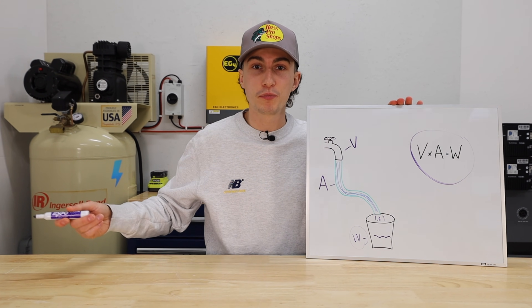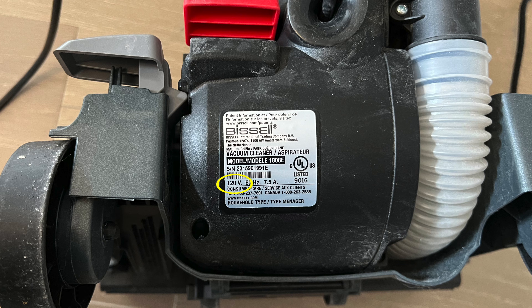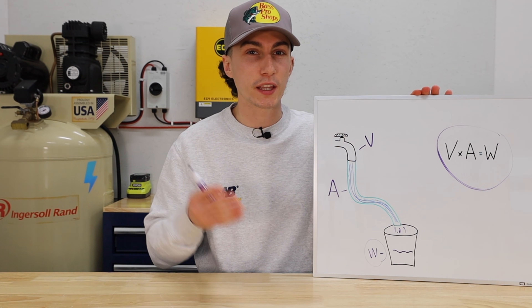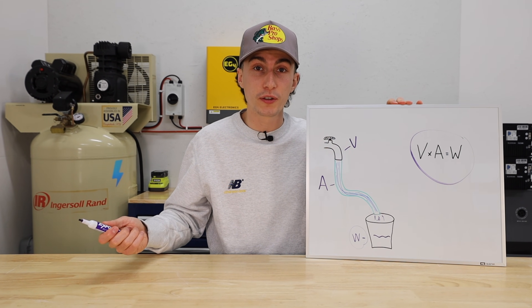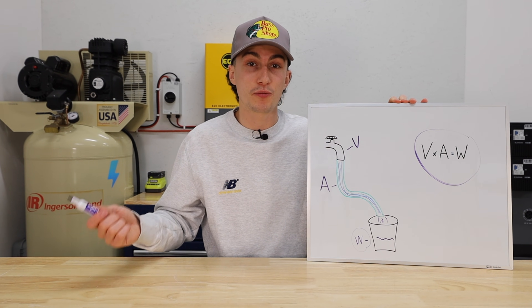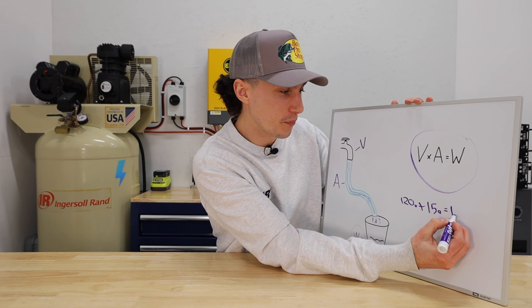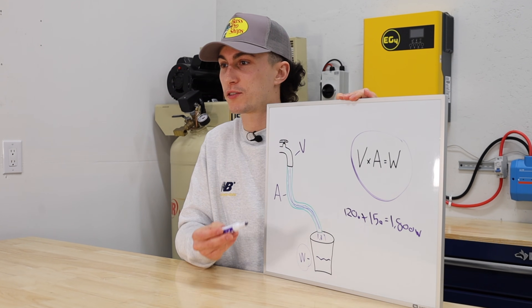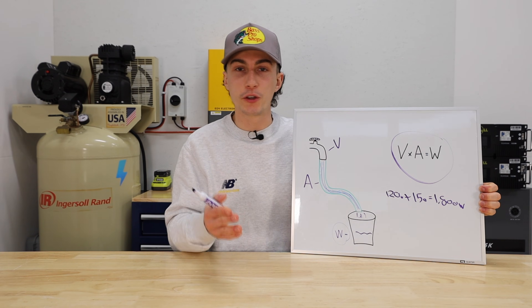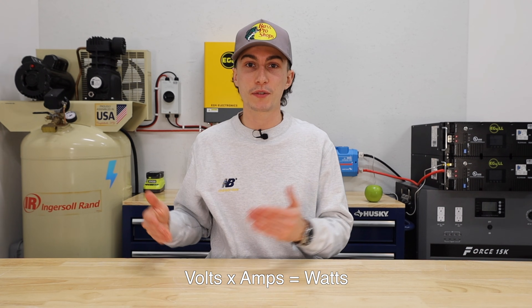So if you have a vacuum that plugs into the wall, it'll say somewhere on it how many volts and how many amps it takes. Almost every single thing that plugs into the wall has to have a sticker on it saying what it requires. All you have to do is take the fact that the vacuum is 120 volts, multiply it by the 15 amps it's rated for, and that equals 1800 watts. You can do that with anything in your house — laptops, your fridge, camera batteries, whatever. Everything in this industry is measured in watts, and you need to know how many watts all of your appliances take. Most of them don't say, so just do volts times amps equals watts.